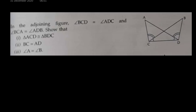Next problem. In the adjoining figure, angle BCD equals angle ADC — these two angles are equal. Second, angle BCA equals angle ADB — that is also given equal. We have to show that triangle ACD is congruent to triangle BDC. Second, we have to show that BC equals AD — they are corresponding sides, so they are equal by CPCT — and we have to show that angle A equals angle B.